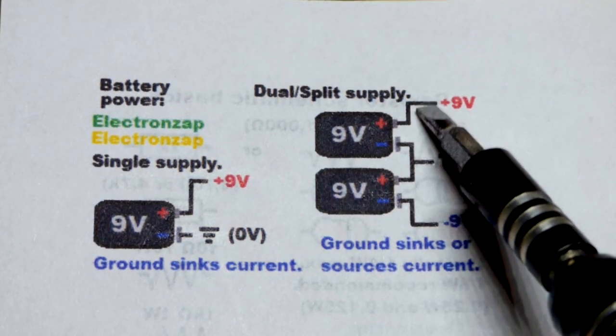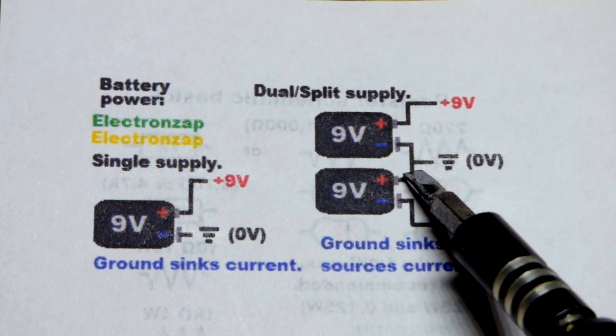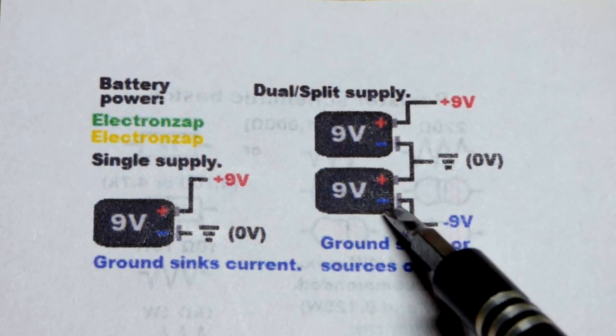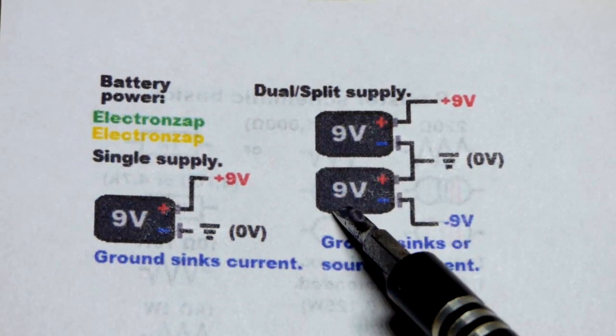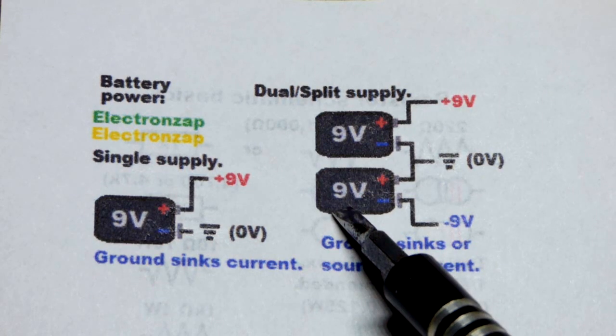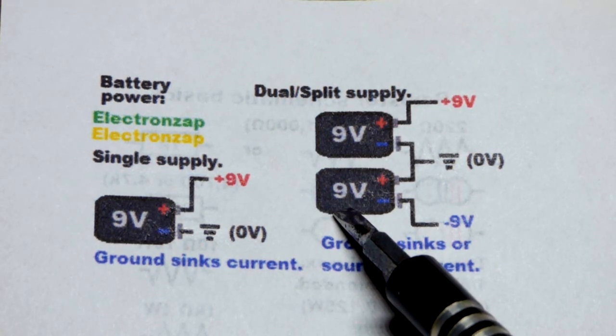Sometimes we want ground to be able to sink current but also be the source of current. Batteries are the easiest to visualize, and op-amps do this. Their outputs like to sink and source current.